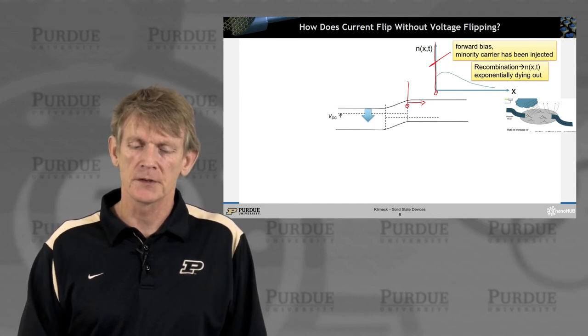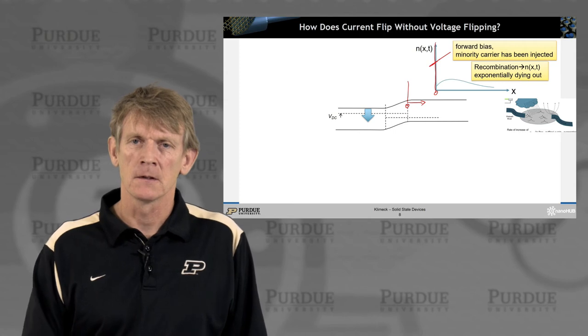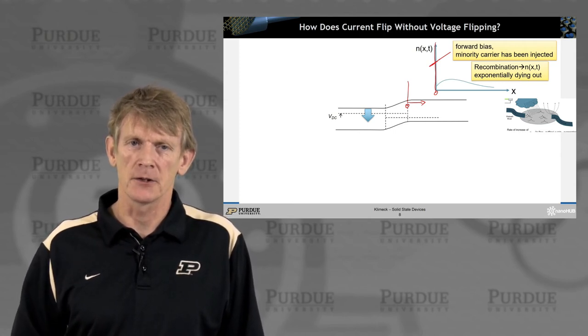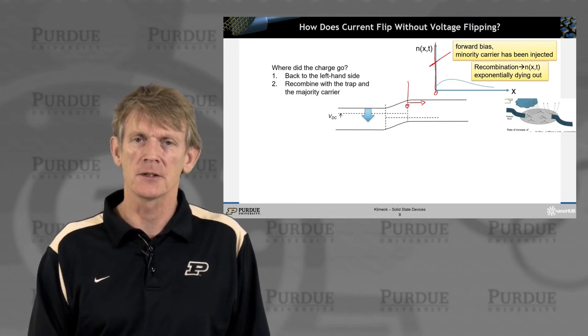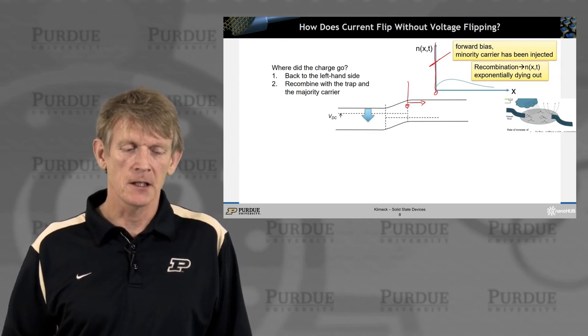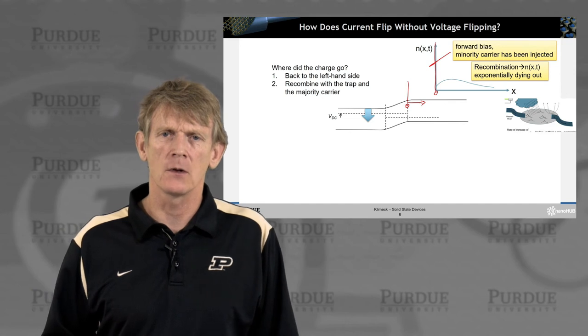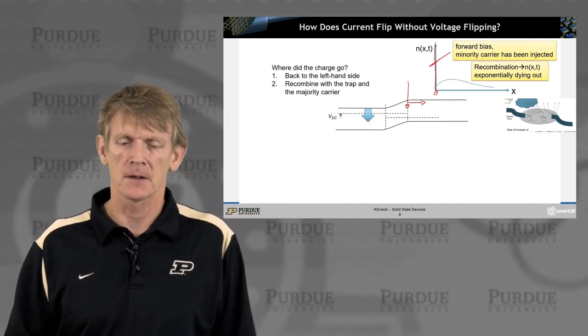and overall the charge is then beginning to trickle back to the majority carrier side. So the minority carrier electrons are then going back to the junction. So where did the charge go? It goes back to the left side and recombines with traps, or it goes all the way through into the majority carrier side.